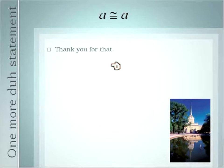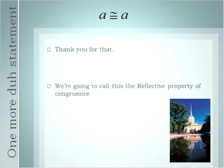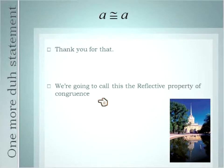Similarly, A is congruent to A is a similar statement. Thank you for letting us know that A is congruent to A. It's the same thing. We're going to call this the reflective property of congruence when it has a congruency sign instead of the equal sign.